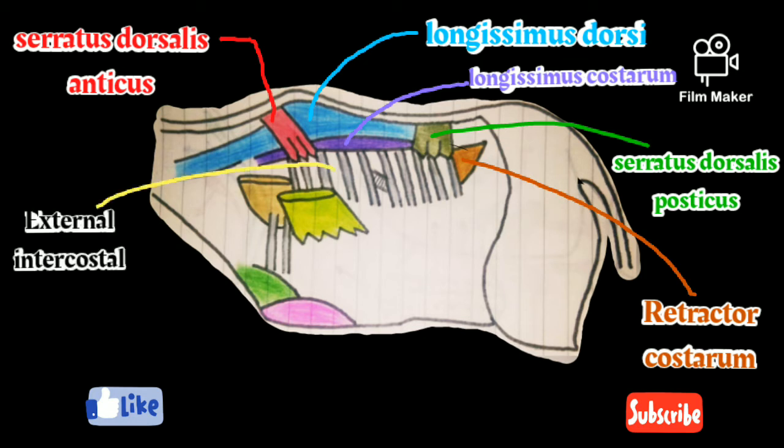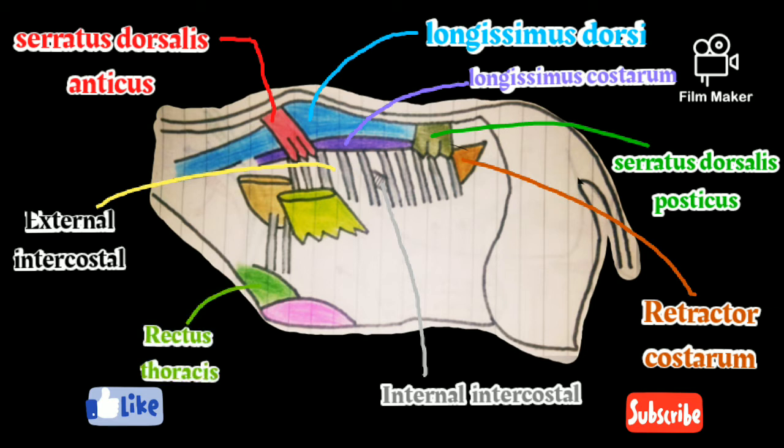External intercostal muscles are placed in intercostal spaces. Internal intercostal muscles are placed internal to the external intercostals. Rectus thoracis is also a small triangular thin muscle.